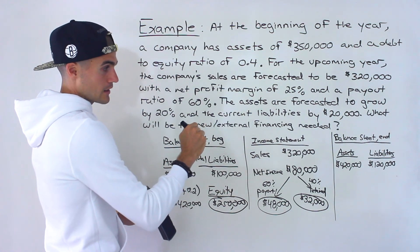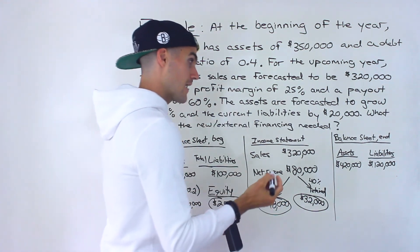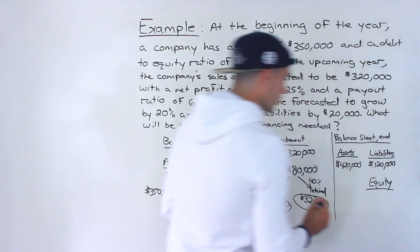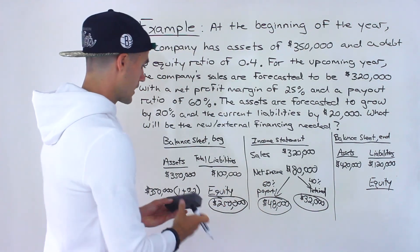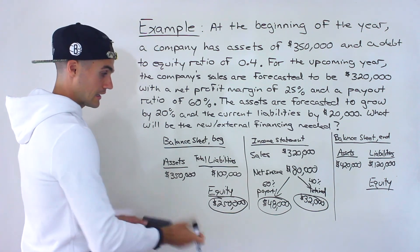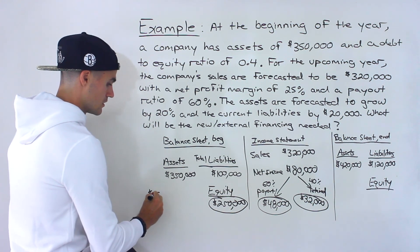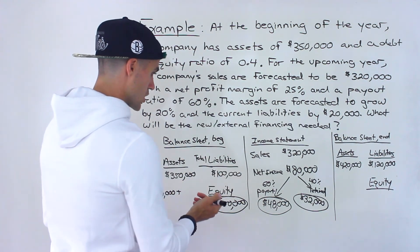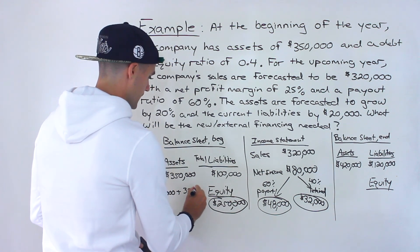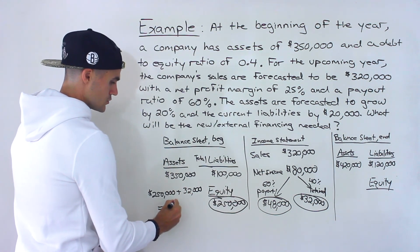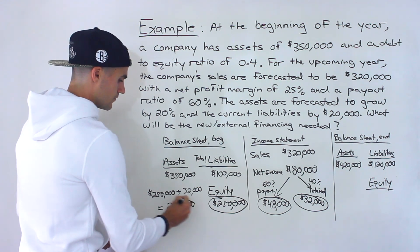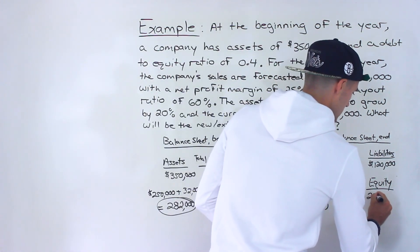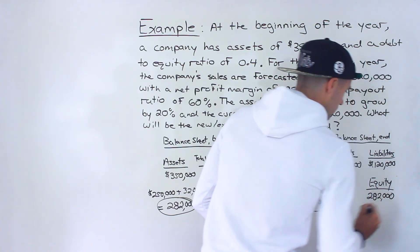So the forecasted total liabilities are $120,000. The forecasted equity equals the beginning equity of $250,000 plus the retained earnings of $32,000, which gives $282,000. That's the ending or forecasted equity.